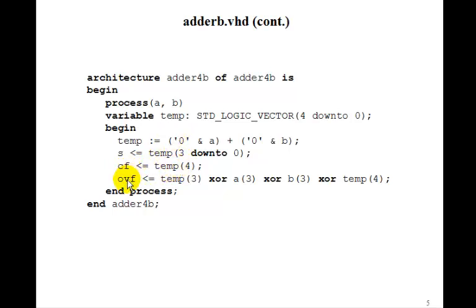And the overflow flag is temp 3, which is really the sum 3, exclusive OR with A3, exclusive OR with B3, exclusive OR with temp 4, which is the carry flag out. So that was the logic equation that we had for the overflow flag.